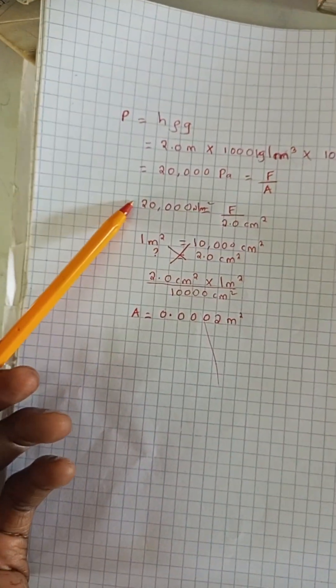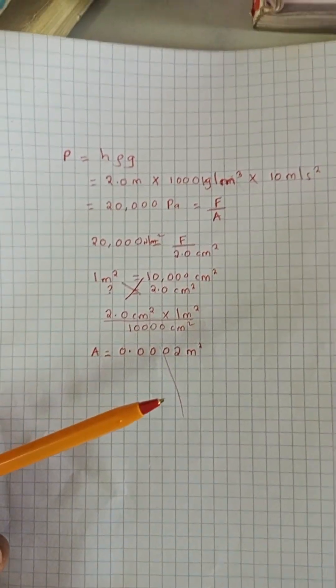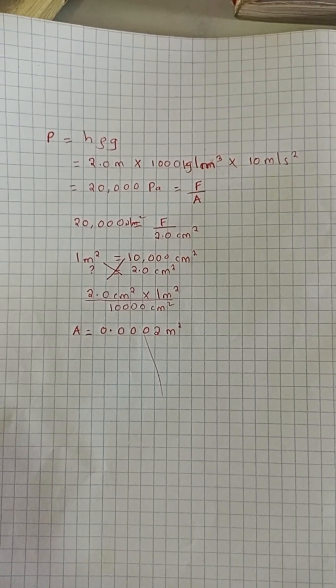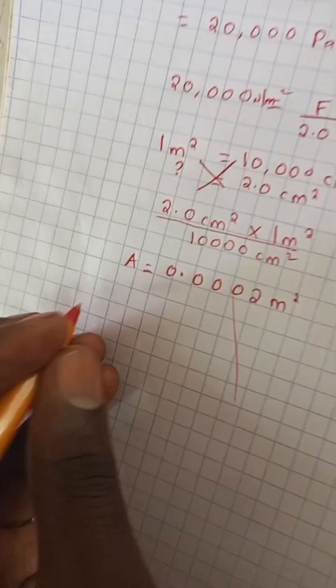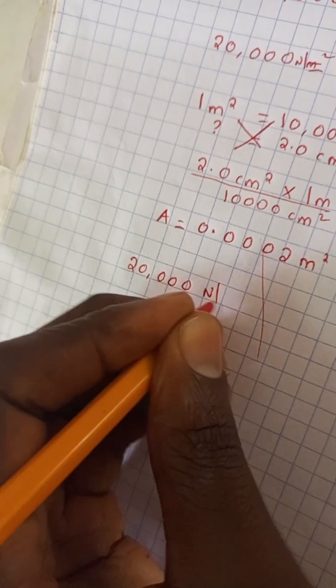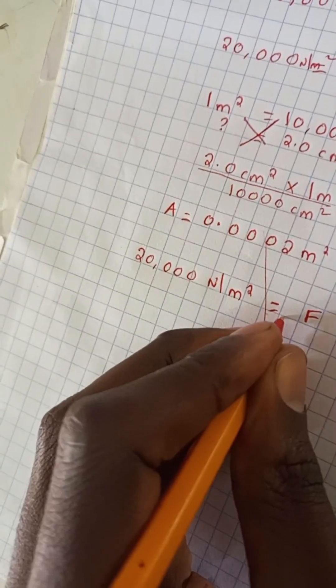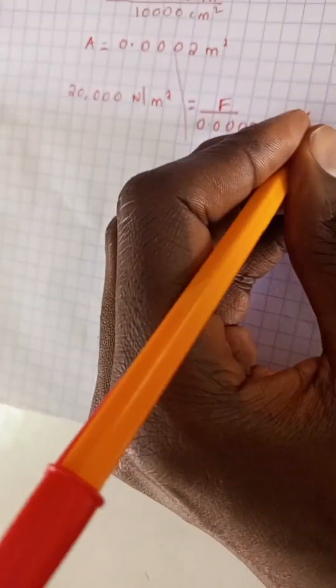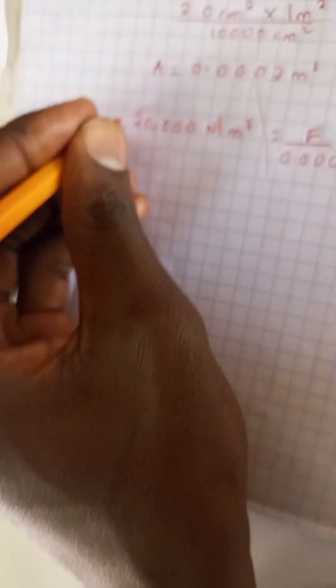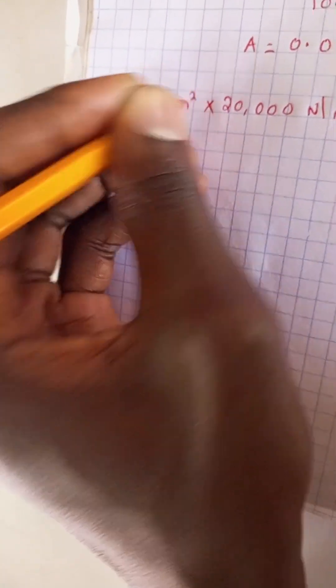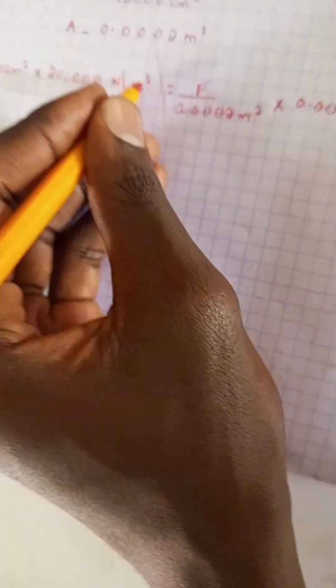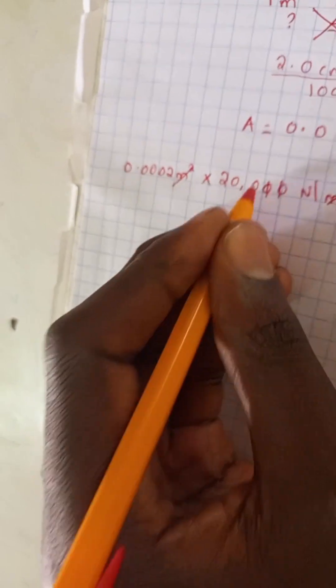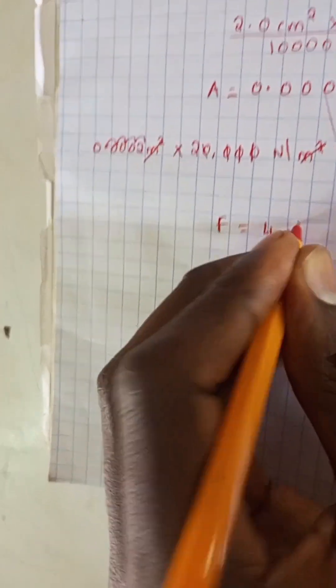Now we have the area in SI units. Because the tank is closed, we only have water column pressure — no atmospheric pressure. Going back to the equation: 20,000 Newtons per meter square equals force divided by 0.00002 meter square. Multiplying both sides by 0.00002, the meter square units cancel, and the force exerted is equal to 4 Newtons.